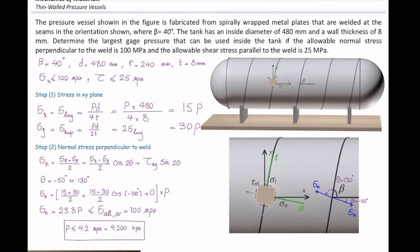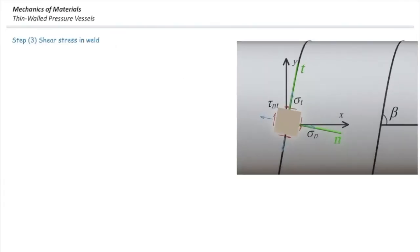Next part requires us to determine the allowable internal pressure based on the shear stress. Okay, we do use stress transformation for shear. And that would be negative sigma x minus sigma y over 2 times sine of 2 theta plus tau xy cosine of 2 theta.